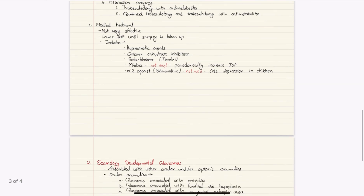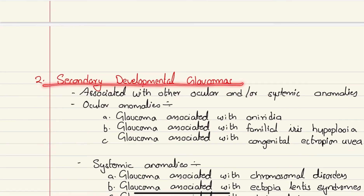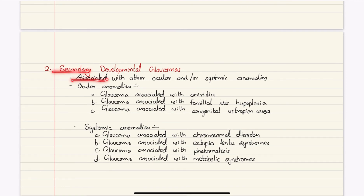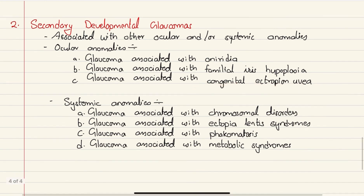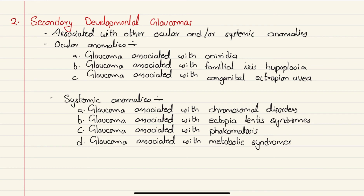Now for secondary developmental glaucomas — since it is a secondary type, it is associated with other ocular or systemic anomalies. Ocular anomalies include glaucoma associated with aniridia, familial iris hypoplasia, and congenital ectropion uvea. Systemic anomalies include glaucoma associated with chromosomal disorders such as Edwards syndrome, Down syndrome, and Turner syndrome; ectopia lentis syndromes including Marfan syndrome and homocystinuria; phacomatoses; and metabolic syndromes such as Hurler syndrome, Louis syndrome, and Zellweger syndrome. That concludes the topic of congenital glaucoma.